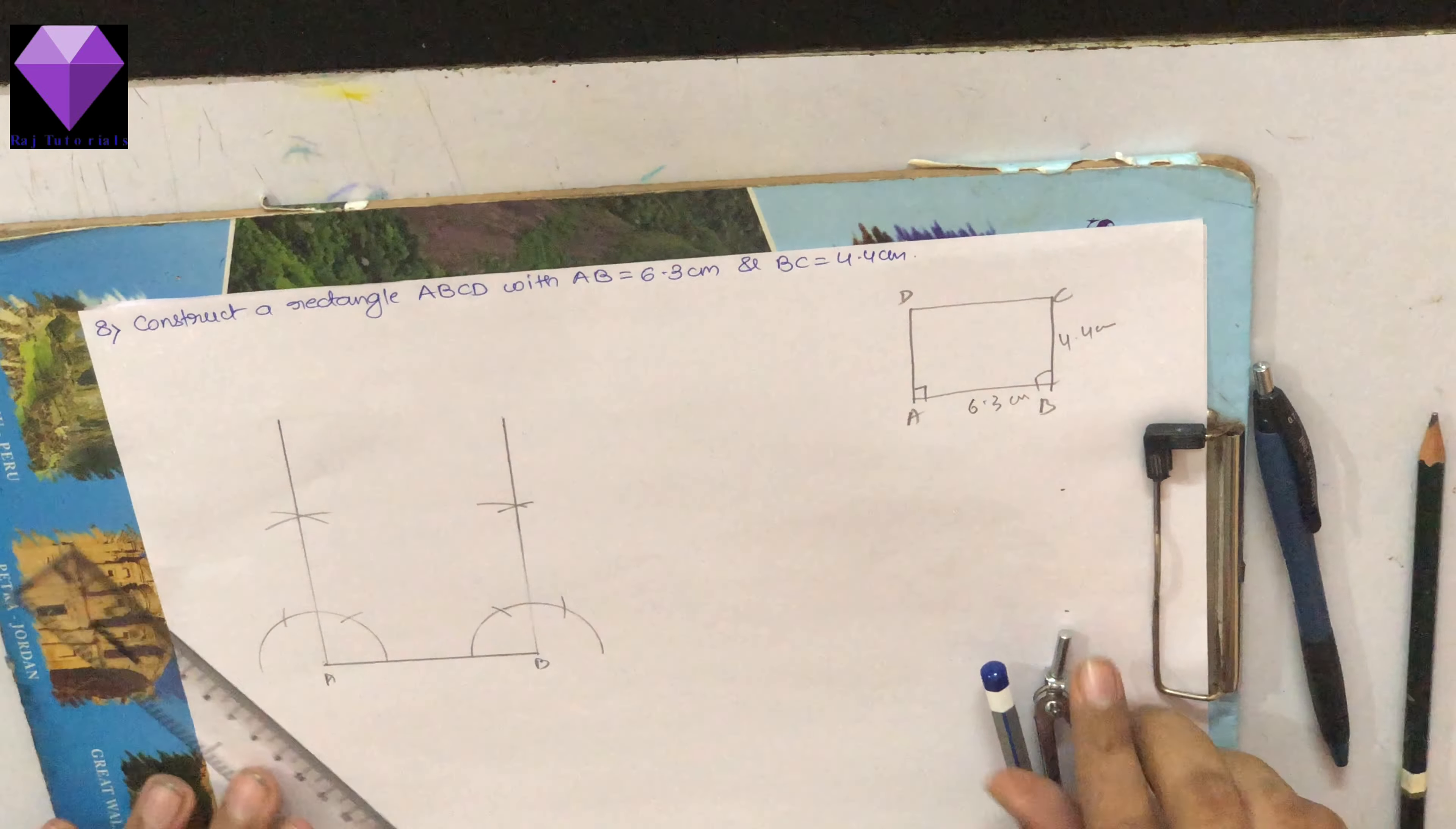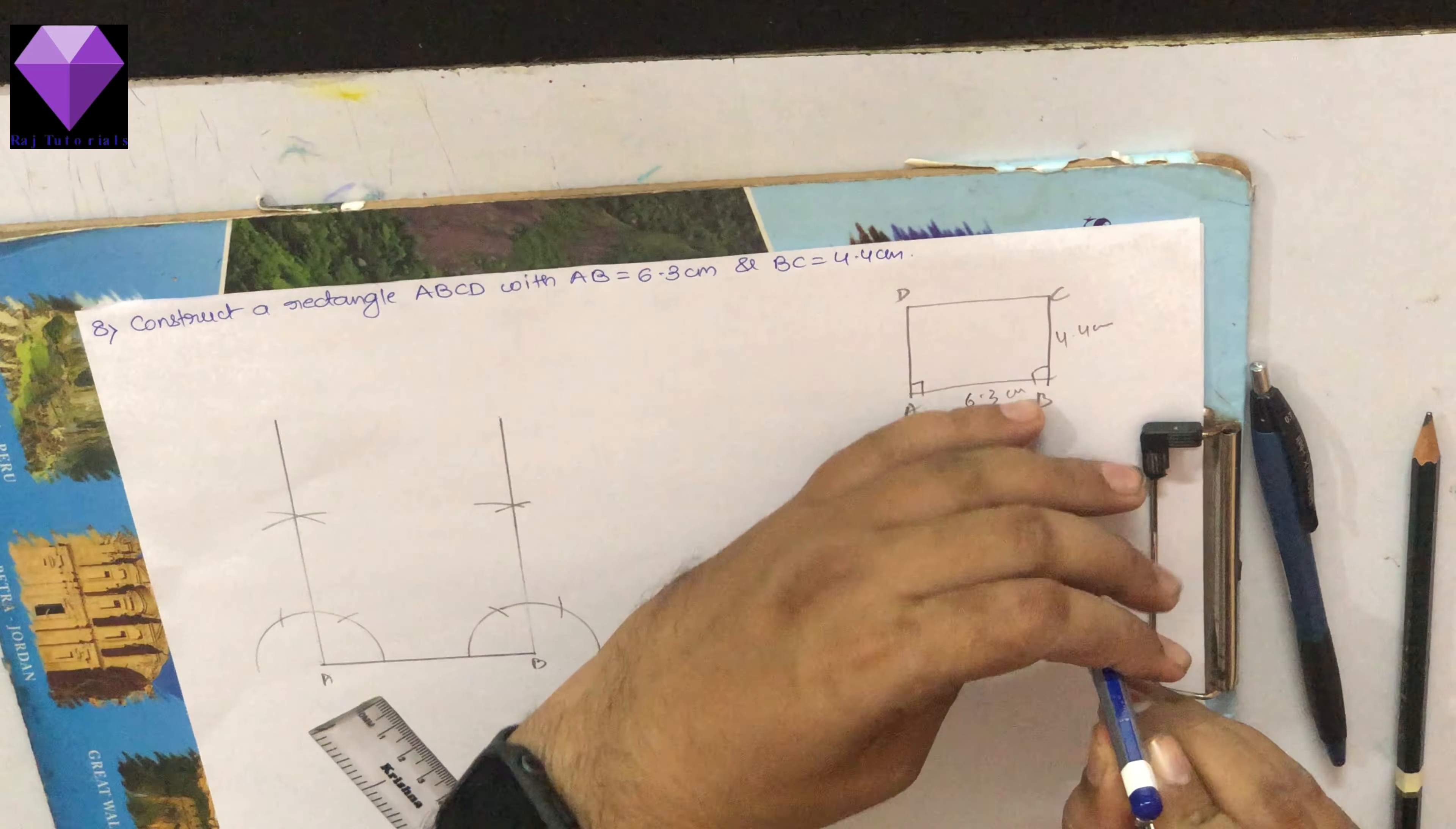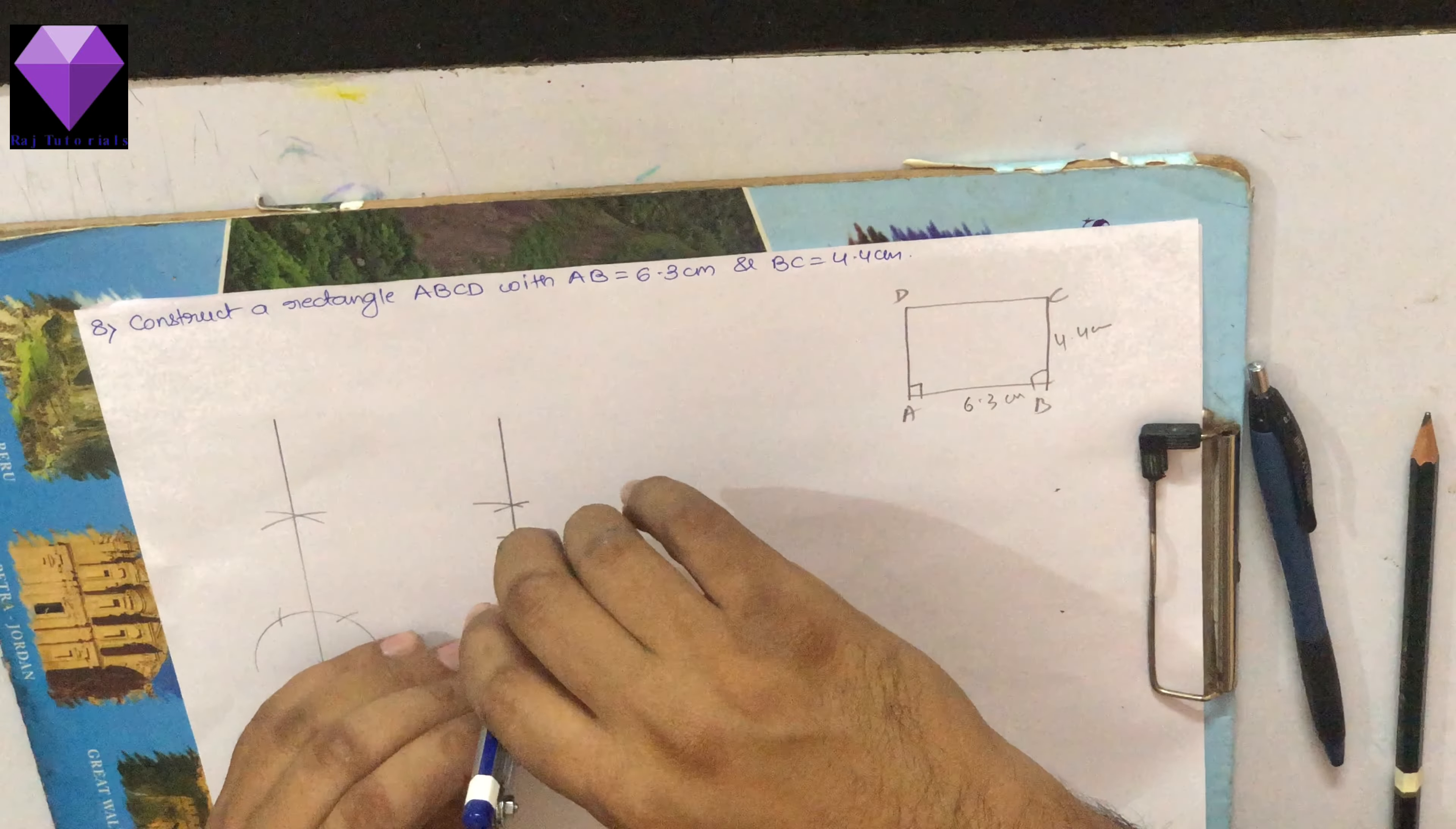Now I need 4.4 cm. BC is given 4.4 cm. So I will measure 4.4 cm in my rounder and with B as center I will mark 4.4 cm.